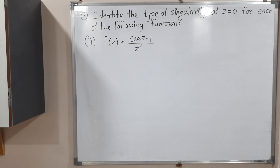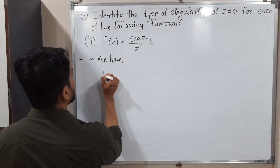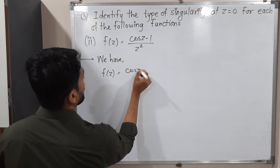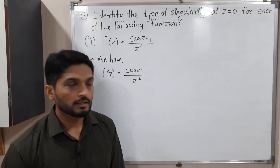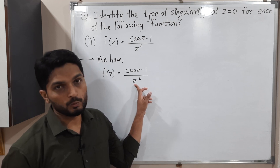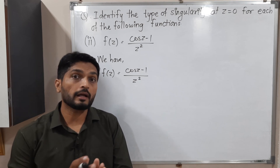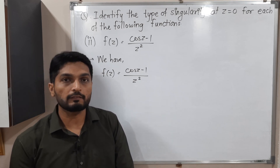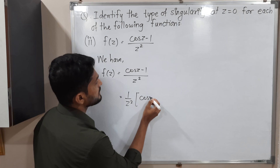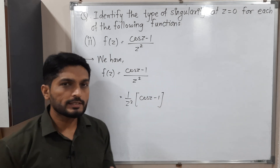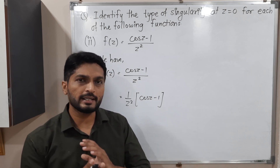Let us discuss the second example. We are starting the solution from here. Let me write the function f(z) again. For what value of Z will the denominator be zero? Obviously, if I put Z is equal to 0, the denominator will be 0. So 0 is a singular point — they have also mentioned this, so nothing is new. We have to find the type of singularity. For that, I will find its Laurent expansion.